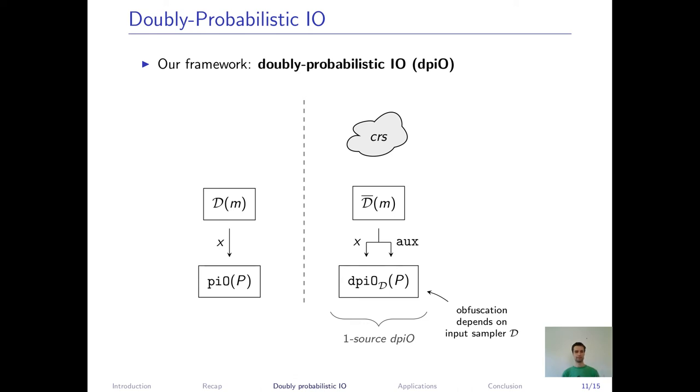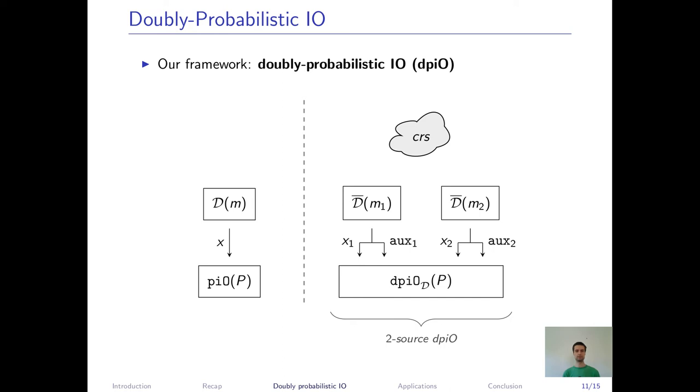Okay, this diagram describes now a one-source DPIO scheme, so for one-input programs, but we can of course arbitrarily extend this to two-source or L-source with multiple input distributions, as long as the number L is small.